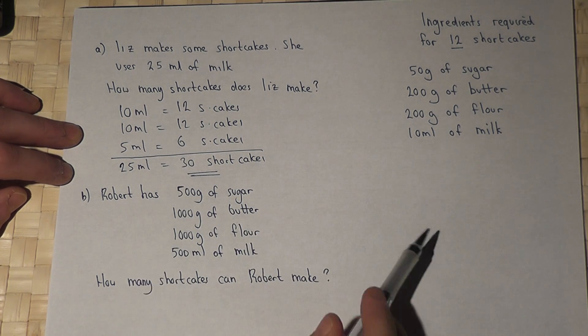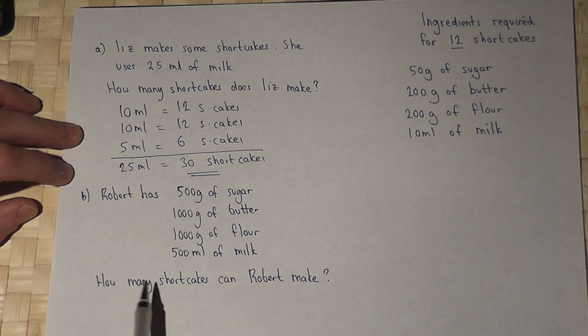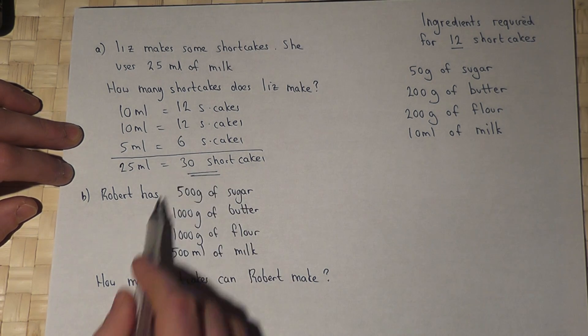Now, a different person, Robert, has lots and lots of ingredients. And the question is, how many shortcakes could Robert make with these limitations?